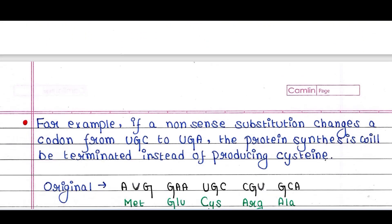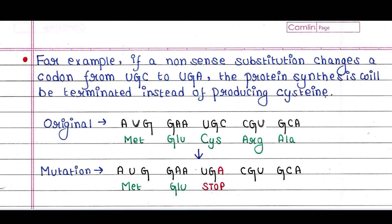Here is an example. This is the original sequence: AUG GAA UGC CGU GCA. A nonsense substitution occurs here — C is substituted by A, making UGA, which is a stop codon.